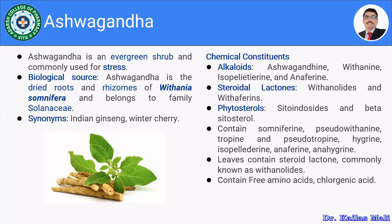Ashwagandha is an evergreen shrub commonly used for management of stress. We are using the dried roots for the treatment of certain diseases. Moving towards the biological source: Ashwagandha is the dried roots and rhizomes of Withania somnifera, belonging to the family Solanaceae.